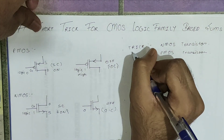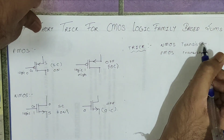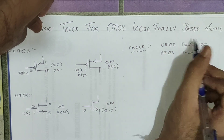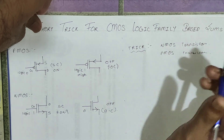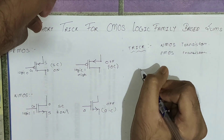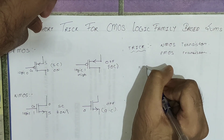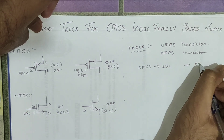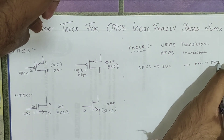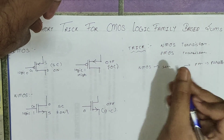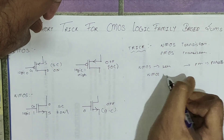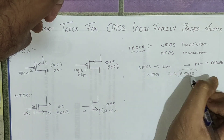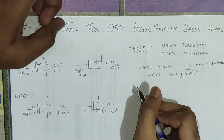Now we will see the trick. The trick is we always focus on the NMOS transistor, and the PMOS transistor will be the complement of this NMOS. What I mean by complement is: if NMOS is in series then PMOS will be in parallel, and NMOS and PMOS are complements of each other.